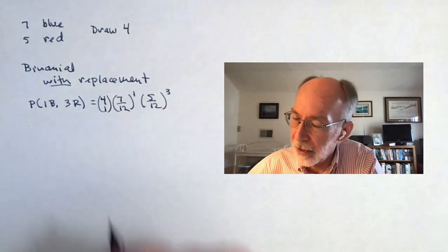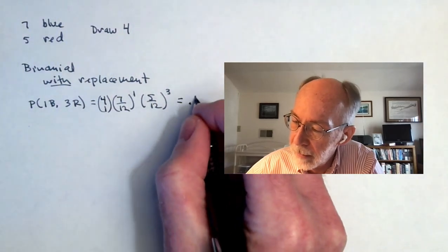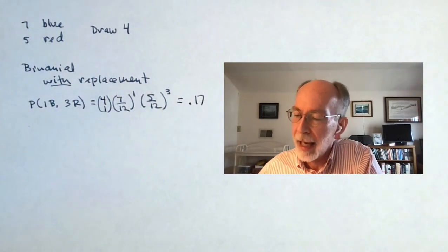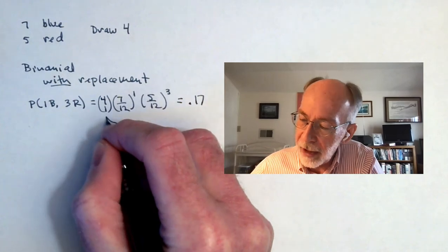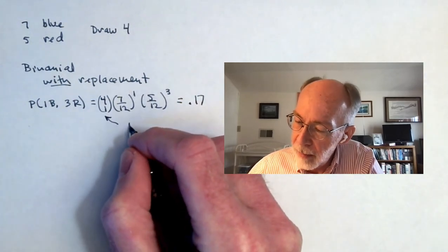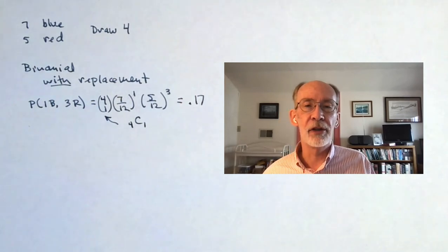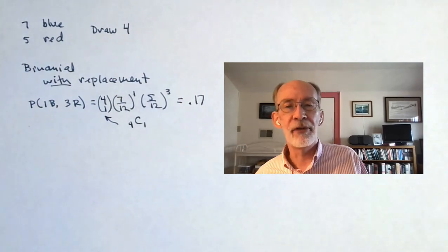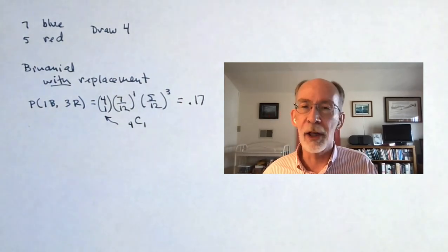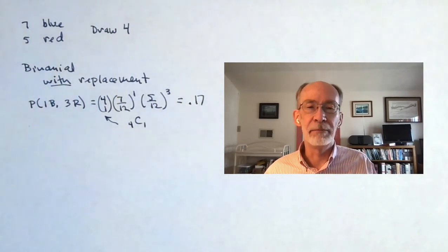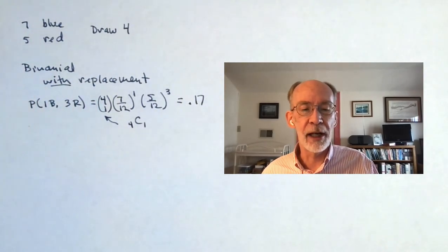If I do this calculation, I get about 0.17. And incidentally, in terms of the notation, you may be more familiar with the notation for combinations that uses the C. I'm a fan of the parenthesis notation just because I can do it faster. But just so we're clear on what I mean when I write that.